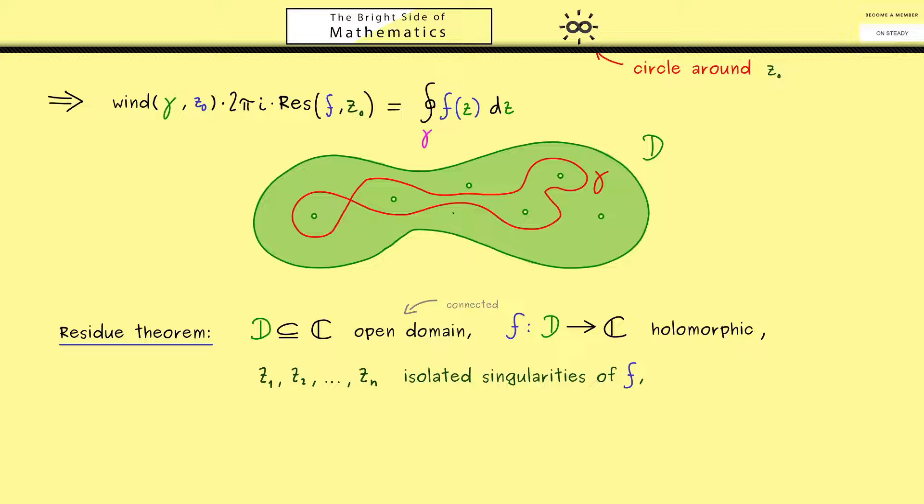Ok and then the only thing missing is of course a closed curve we call gamma. And obviously the range of gamma should lie in D. However now it's very important that with the curve gamma we don't surround any other non-isolated singularities of f.